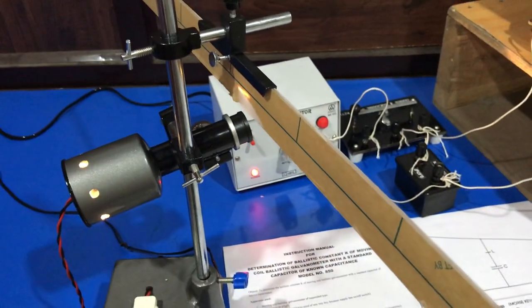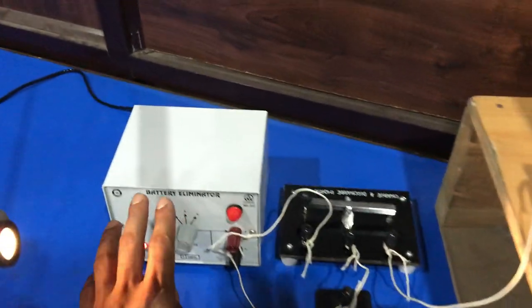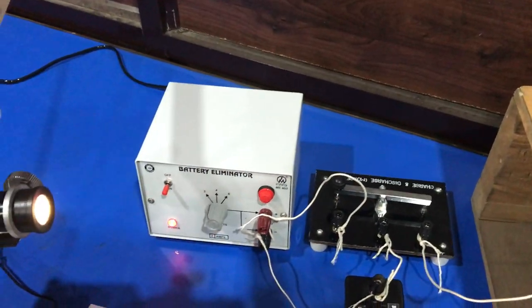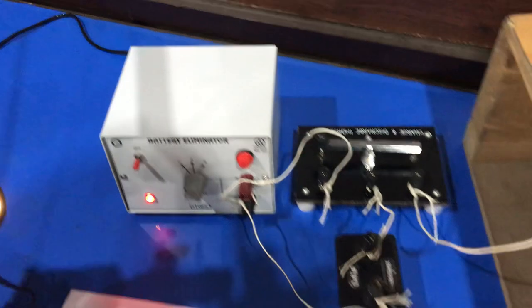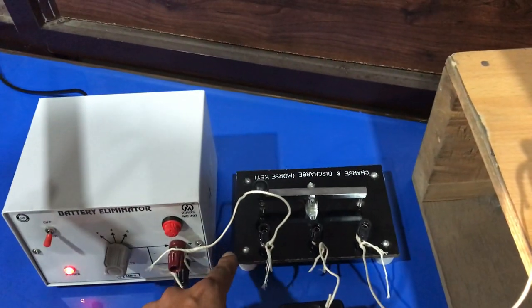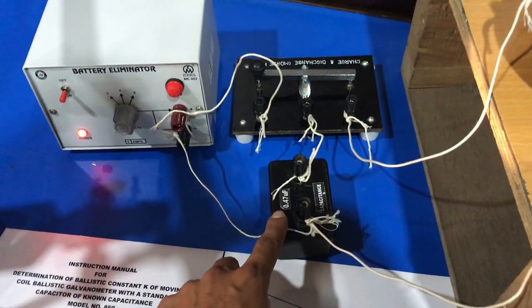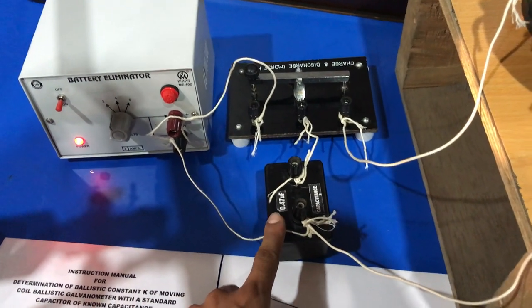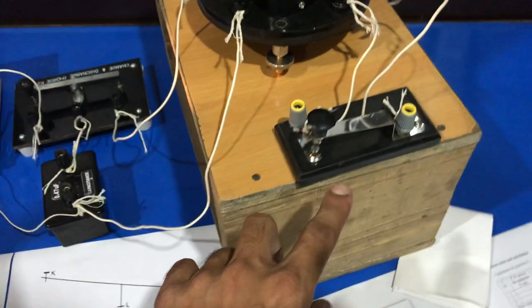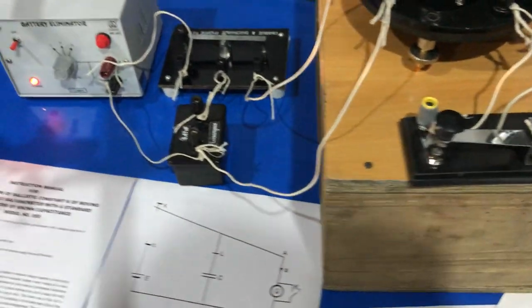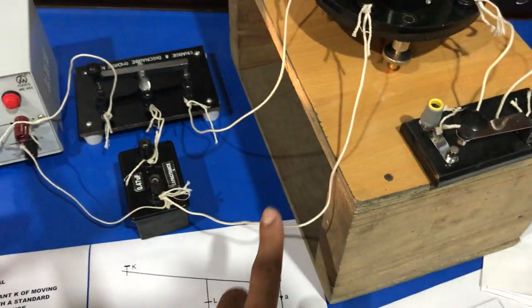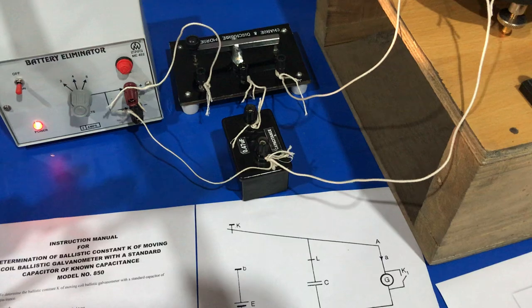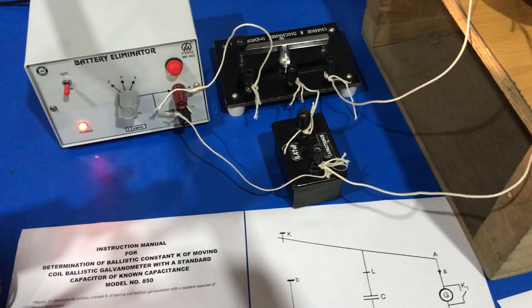Battery eliminator of 2 to 6 volts, Morse key, standard capacitance of 0.47 microfarad, tapping key, and DC connecting wire of order of 1 to 2 meters. Now I will show the connections.